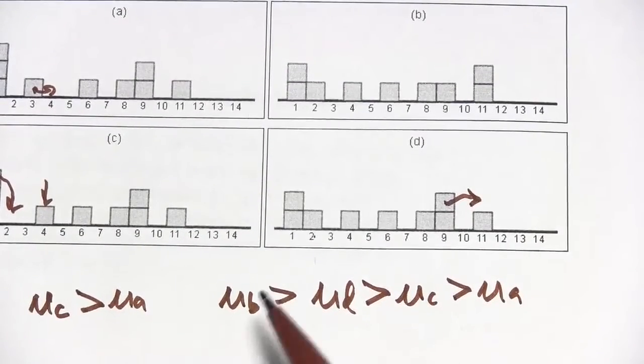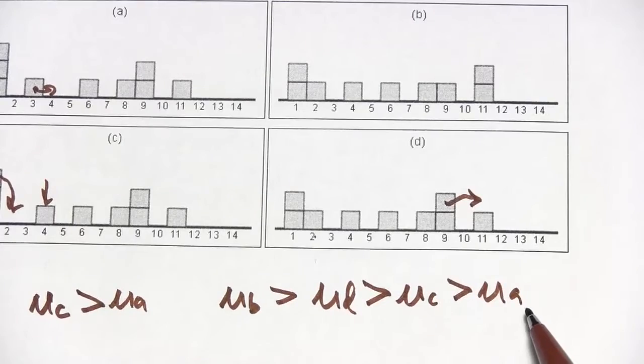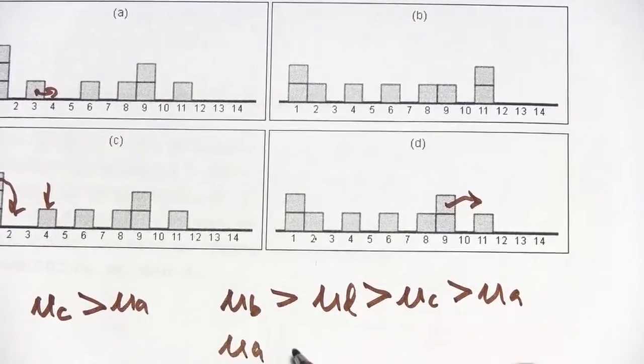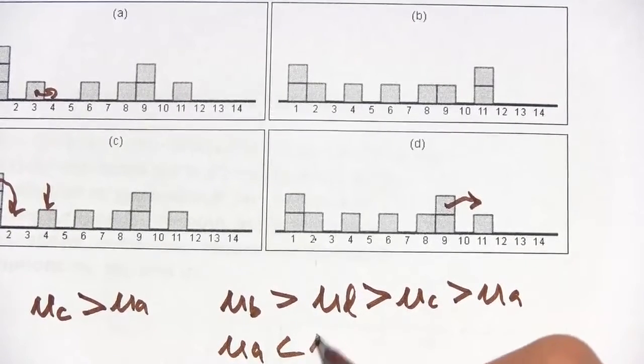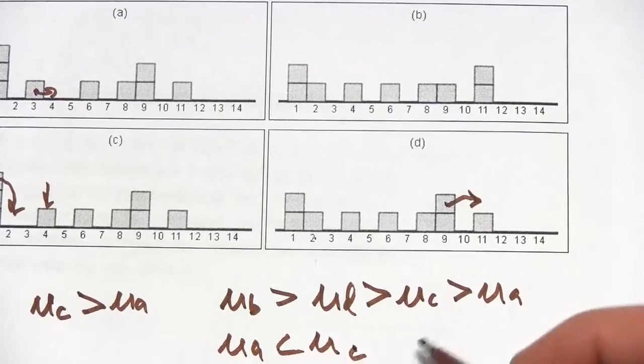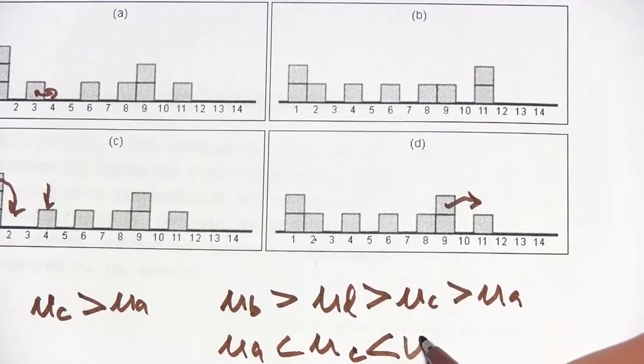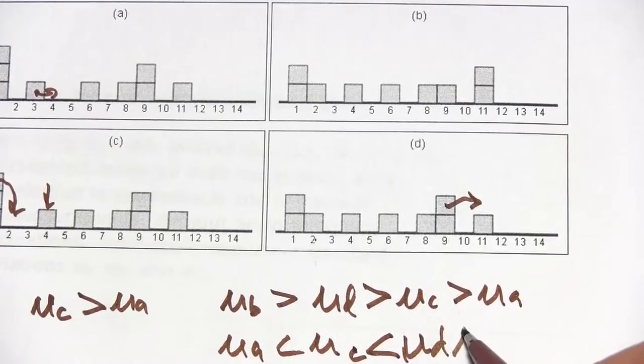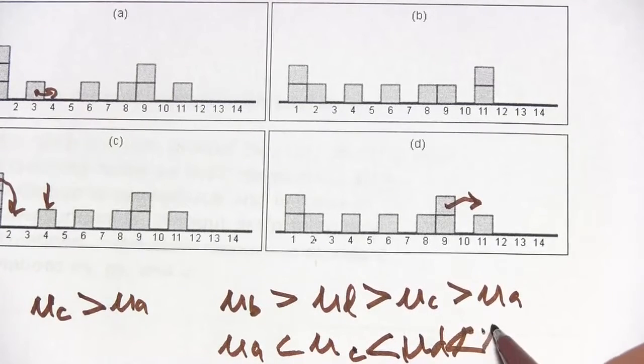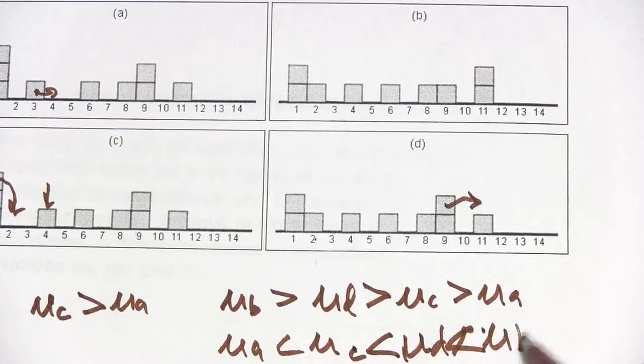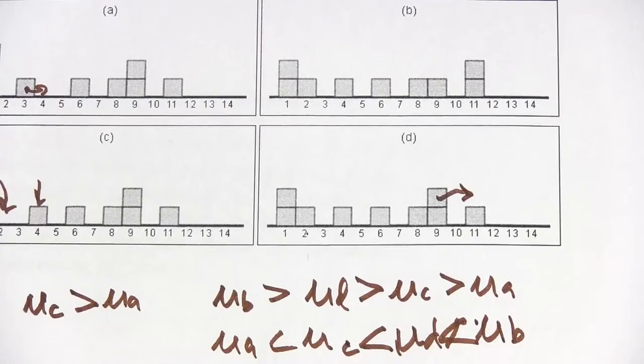We could write this the other way too. We could say μa is less than μc, which is less than μd, which is less than μb. So that's a little bit of work with comparing means without calculation.